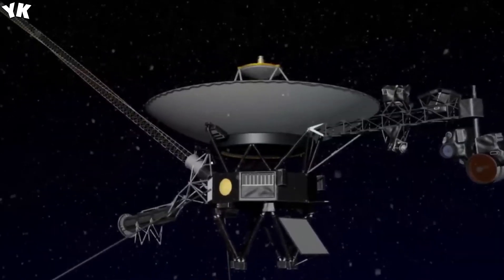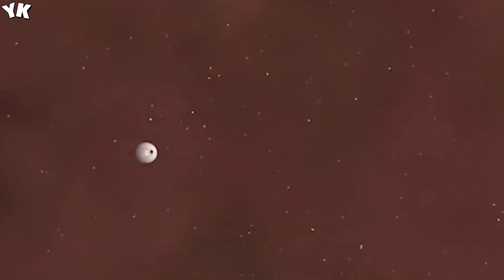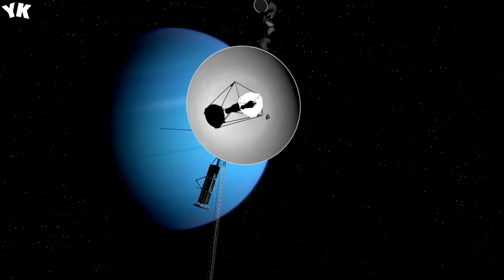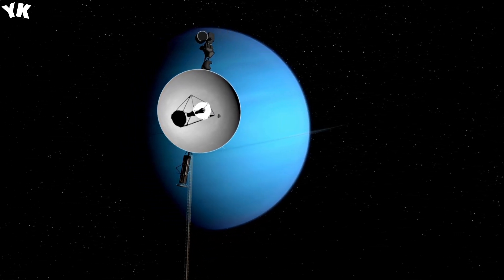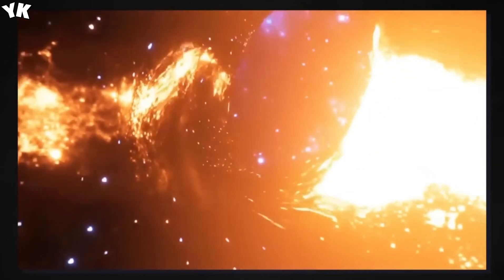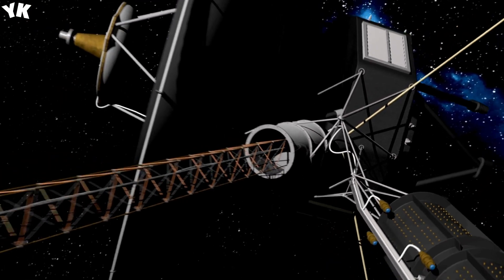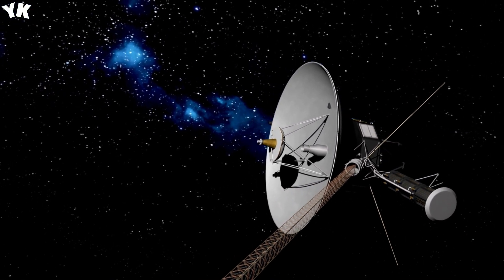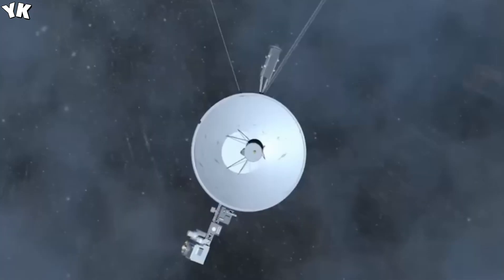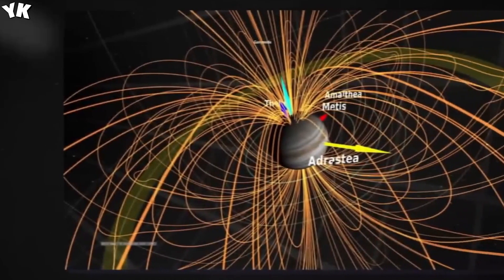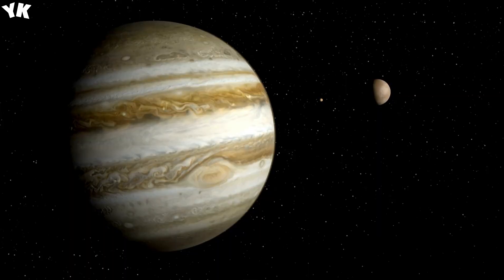Voyager 1 was powered by a remarkable device known as a radioisotope thermoelectric generator, or RTG, utilizing the decay of plutonium-238 to produce electricity. The process involves irradiating neptunium-236, which undergoes radioactive decay to become plutonium-238. Within the RTG, there's a clever arrangement of thermocouples. When exposed to the heat emitted by decaying plutonium-238, these thermocouples create a temperature gradient, generating an electric current through the Seebeck effect, which powers Voyager 1's instruments and systems.